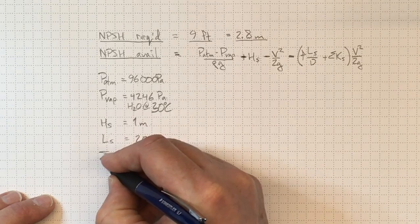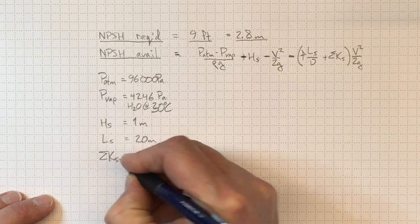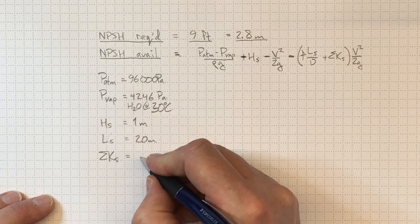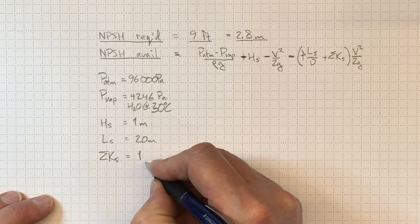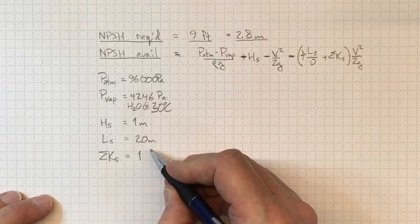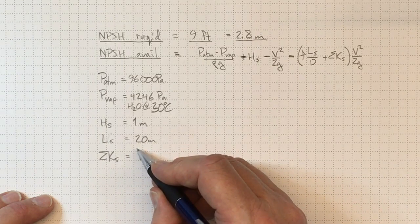The length of the suction line might be 20 meters, and the sum of the K values for minor losses in the suction is going to be the reentrant entry and one gate valve, so it's a number around one.